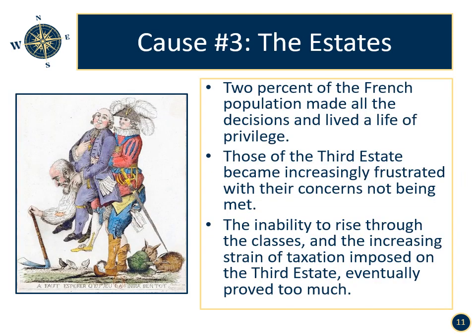Cause number three: the Estates. Two percent of the French population made all the decisions and lived a life of privilege. Those of the Third Estate became increasingly frustrated with their concerns not being met. The First and Second Estates made up two-thirds of the Estates General, the French Parliament, and always outvoted the Third Estate. The inability to rise through the class system and the increasing strain of taxation imposed on the Third Estate eventually proved too much.